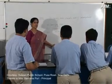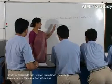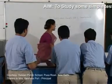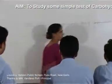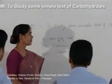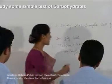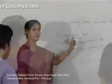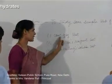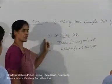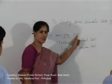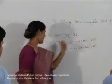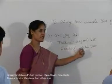Students, the next experiment we are going to perform is to study some simple tests of carbohydrates. For this purpose we will be taking the solution of glucose and performing three tests: the first is concentrated sulfuric acid test, the second is Tollens' reagent test, and the third is Fehling's solution test.